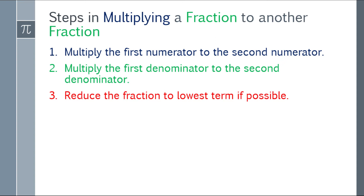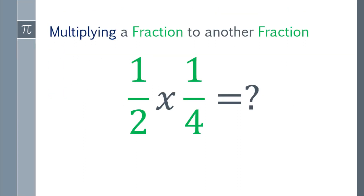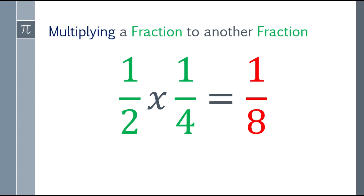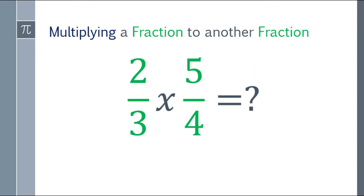Let's go back to our problem: one half times one fourth. One times one is equal to one. Next, we multiply the denominators: two times four is equal to eight. So our answer is one eighth.